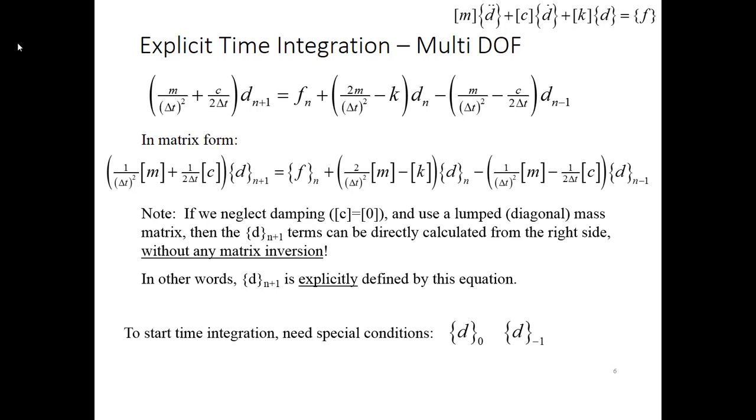To start, though, we have something a little funny here. We need to know displacement at the current time, time 0, but we need to predict what the displacement must have been at time t minus 1. And I'll show you how to do that in an example.